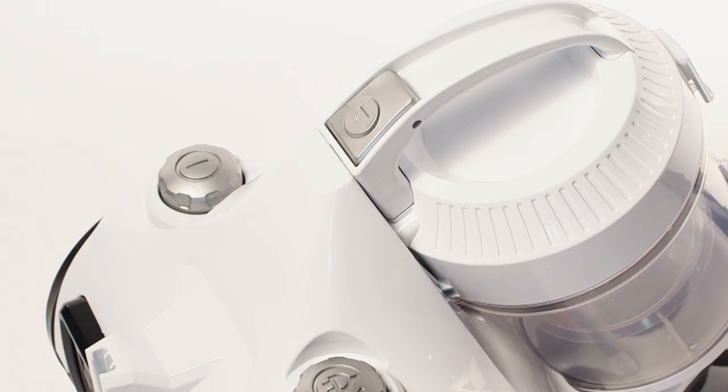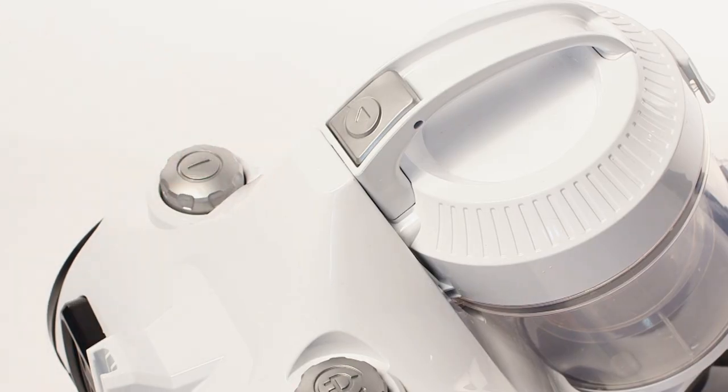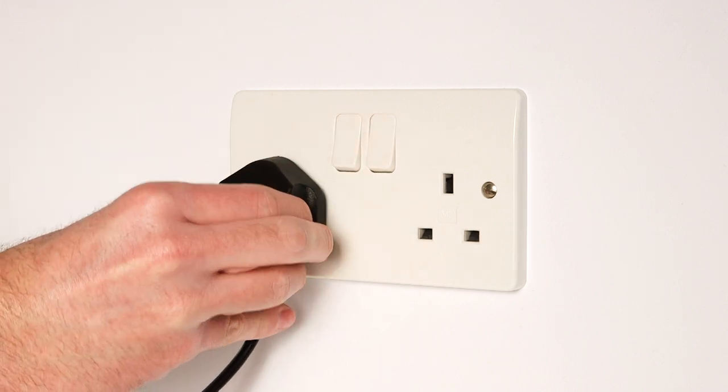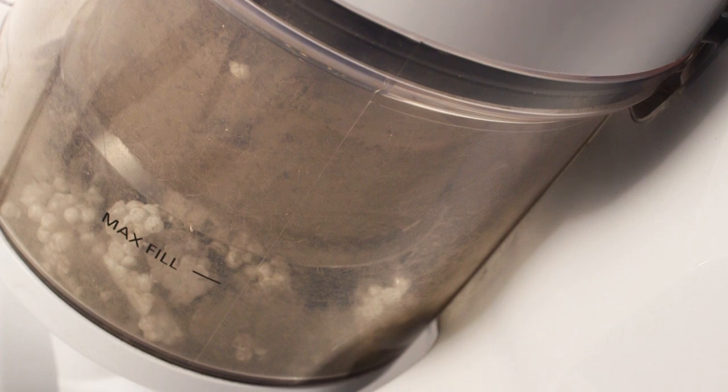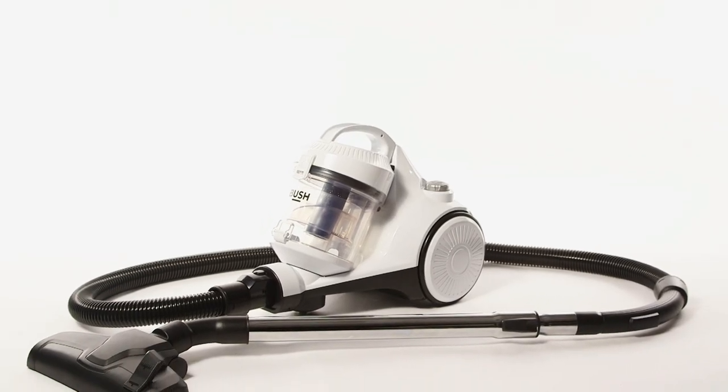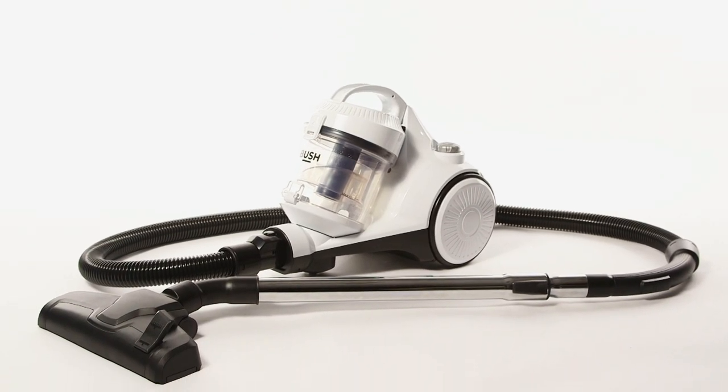Before emptying the vacuum, ensure it is switched off and disconnected from the mains. When the dust container has reached the max line or the suction power is reduced, it is time to empty the dust container.